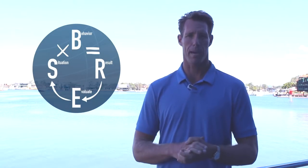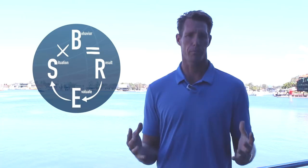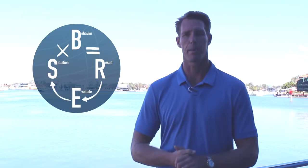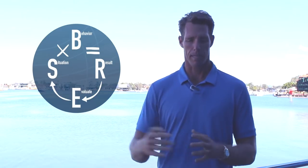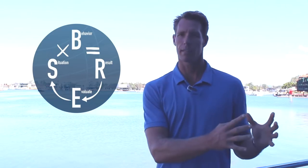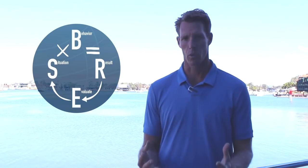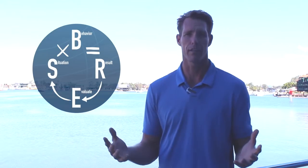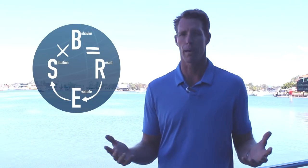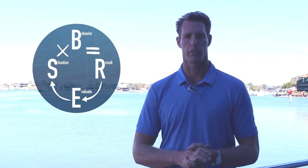The B in the model stands for behaviour, and this is where we use our DISC profiling. The reality is that people prefer to behave in certain ways, but given the environment they're exposed to, we have to make choices — whether this behaviour or that behaviour is going to give you a better result. The final part of the model stands for result.